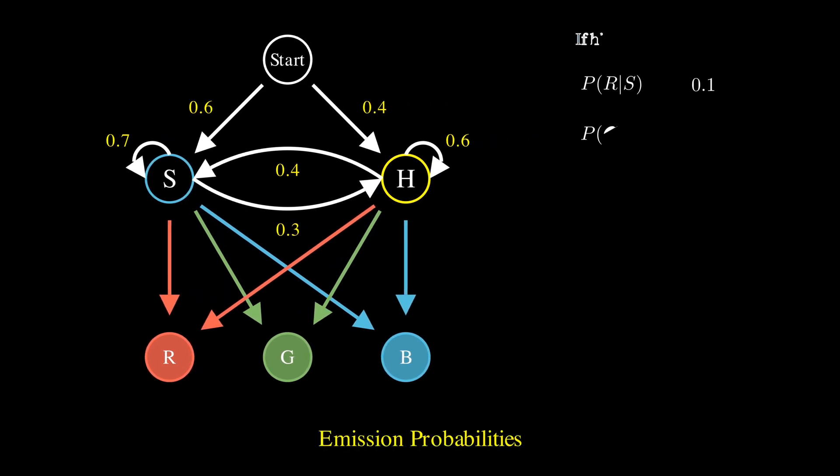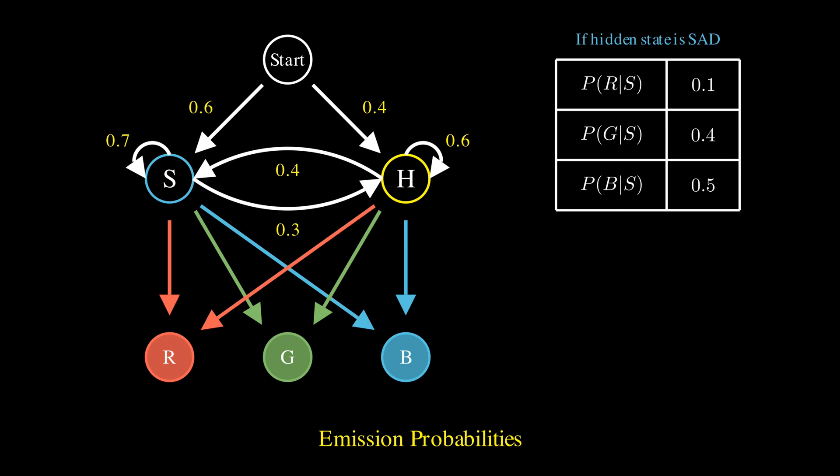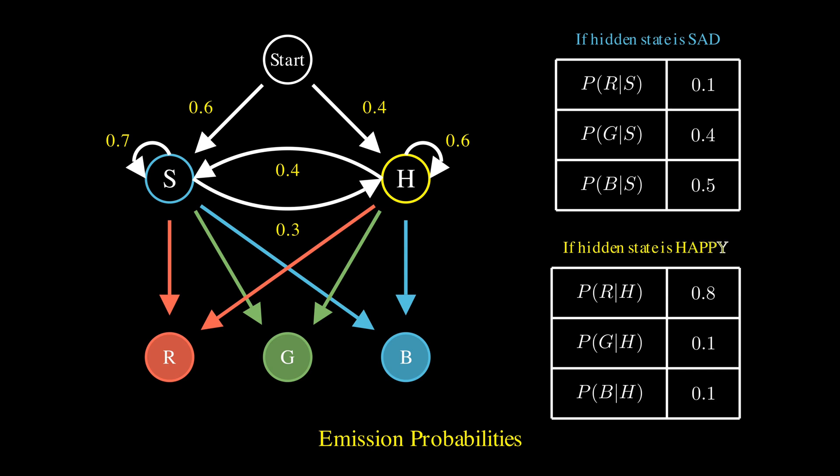If the hidden state is sad, there is a 10% chance of observing a red hat, 40% chance of observing a green hat and a 50% chance of observing a blue hat. However, if the hidden state is happy, there is an 80% chance of observing red, a 10% chance of observing green and a 10% chance of observing blue. And again, these are called the emission probabilities.